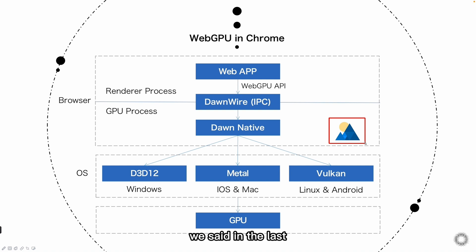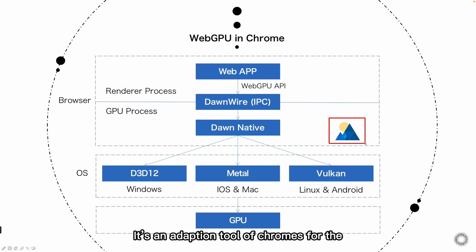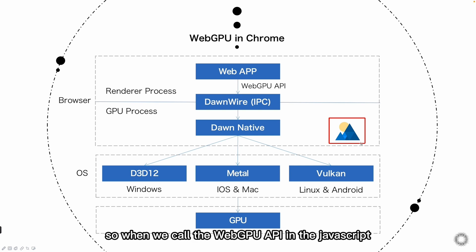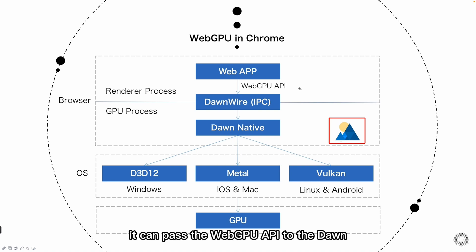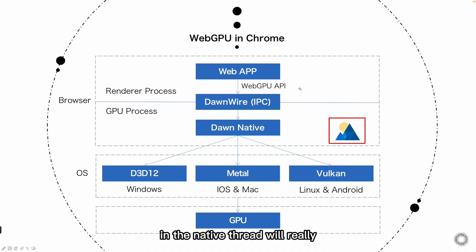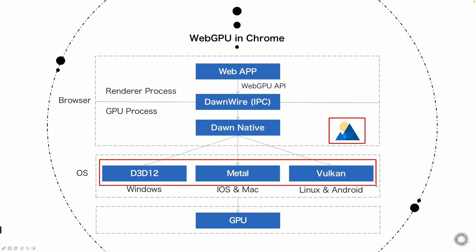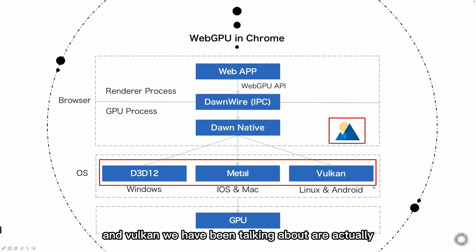Now let's look at WebGPU again. Take Chrome as an example. Dawn is an open source project based on C++. It's an adaptation tool of Chrome for the bottom layer and GPU. Other browsers have a similar structure. So when we call the WebGPU API in JavaScript, the relevant commands and parameters are actually passed to Dawn by the browser. Then it is responsible for the serialization and deserialization processing related to WebGPU. It can pass the API of WebGPU into the Dawn native module, and then Dawn in the native thread will really call the underlying GPU API of the operating system to do some computational and drawing work. Direct3D, Metal, and Vulkan are actually the corresponding graphics driver APIs at the bottom of the system.